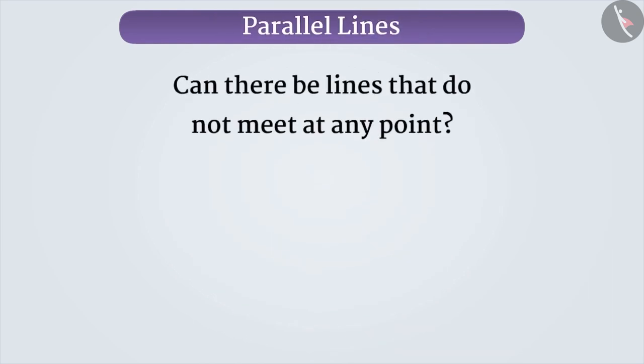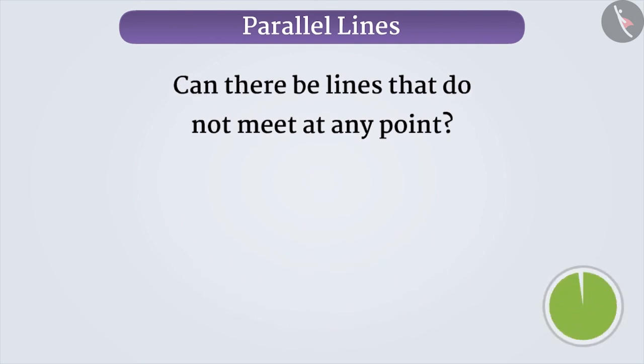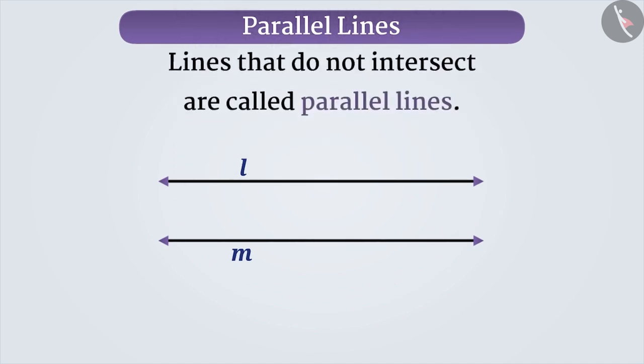Can there be lines that do not meet at any point? Think. You are right. If the distance between two lines always remains the same, then they will never be able to intersect. Lines that do not intersect are called parallel lines.